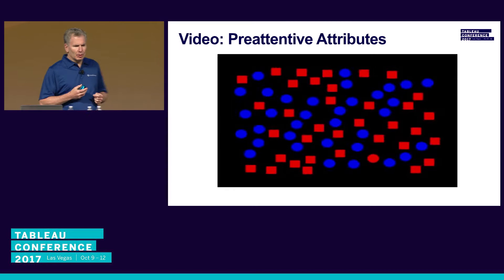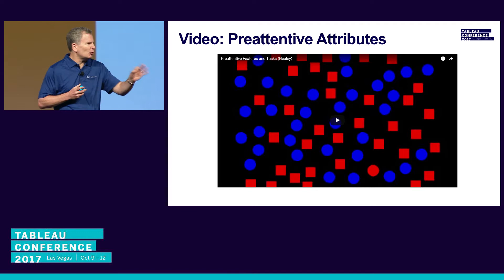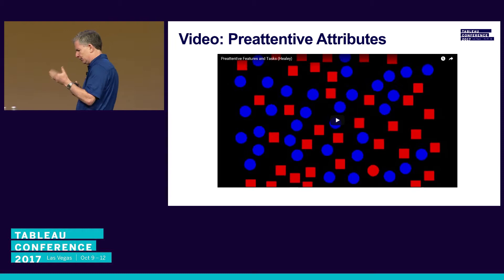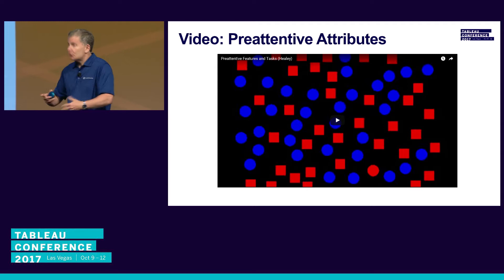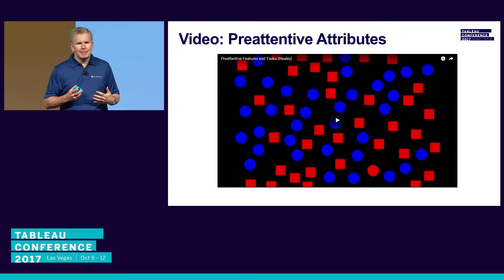I'm going to show you a quick video now by Christopher Healy of North Carolina State University. He's going to show some of those pre-attentive attributes and show you things really fast — they're going to flicker. You'll tell whether or not you can see what he's trying to show, and how effective it is as a pre-attentive attribute. You'll also notice that when you combine these pre-attentive attributes, it may actually be too much of a good thing and you get what he calls visual interference.